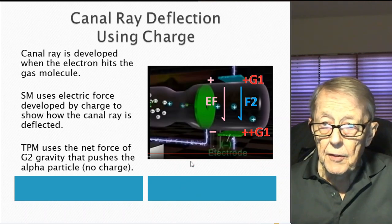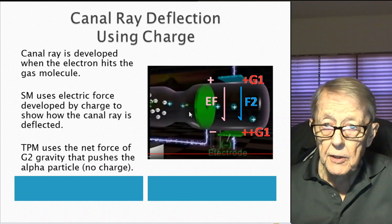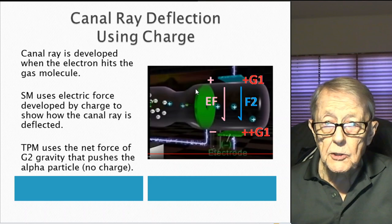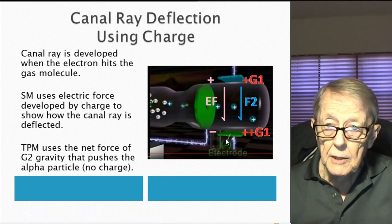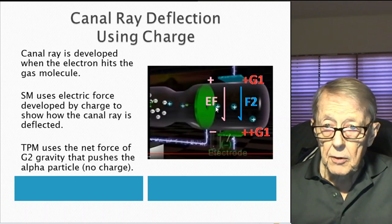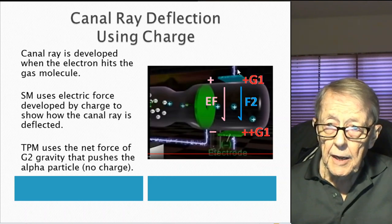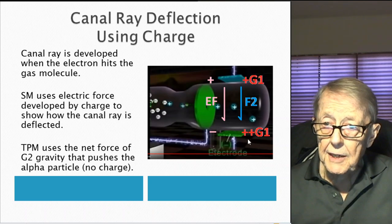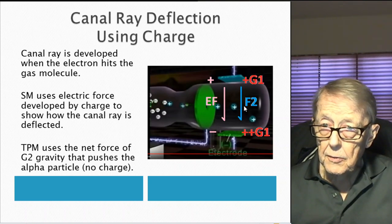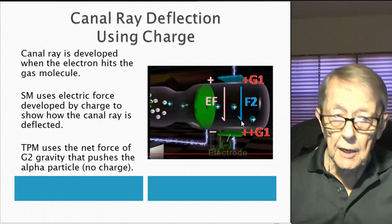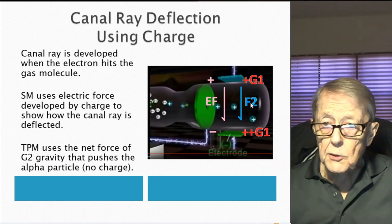This is the deflection I was thinking was going to happen. Because the canal rays — the ray itself is developed here — you can see the ray coming this way. The standard model uses an electric field from plus to minus to push the positive ion towards the negative plate, or you could think of it as a plus charge being attracted to negative. But in the particle model, we have an accumulation of a large number of G1 particles here, giving us an imbalance in G1 particle density, which sets up a net G2 force pushing the ion down. In the particle model, this doesn't have charge — we're just pushing an object that has some mass.